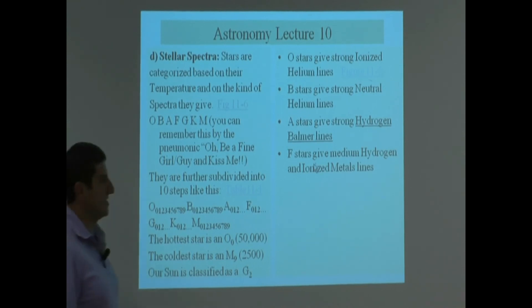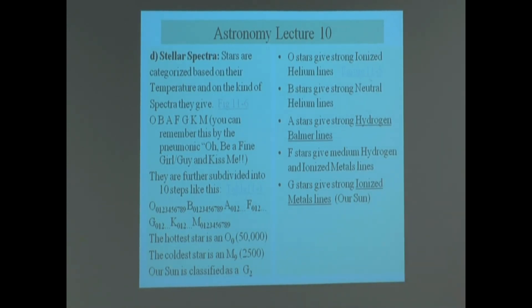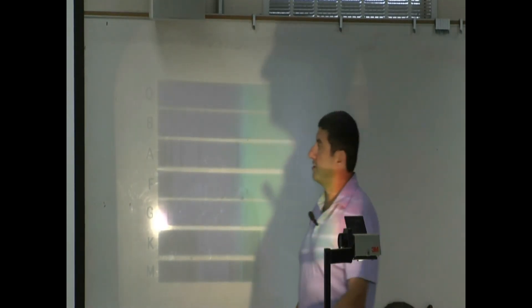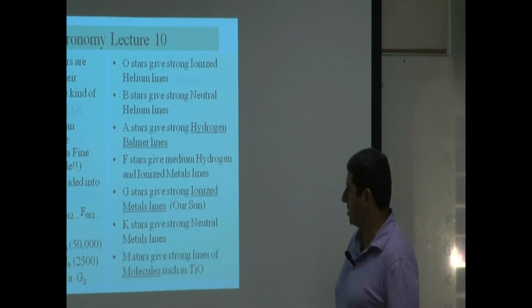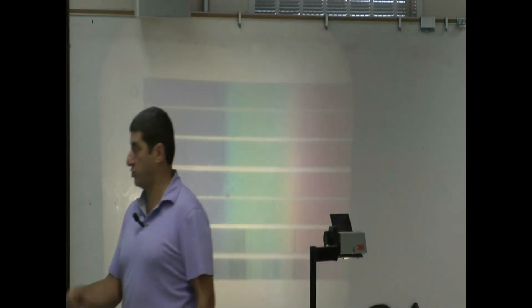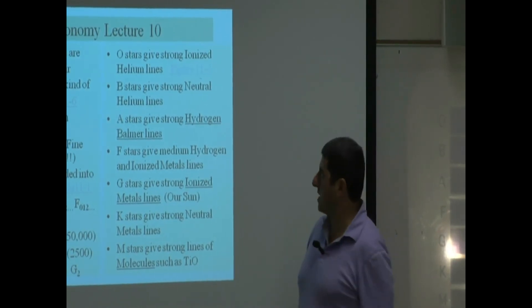F stars give medium hydrogen lines. They're not that strong. They give ionized metal lines. G stars give strong ionized metal lines. So our sun, it doesn't give the strongest Balmer lines, but it gives ionized metal lines. You see here, this is the other way to look at it. So the A star, you see here, gives the strongest Balmer line right here. This is the Balmer line. And then the G star, which is the sun, gives the strong ionized metal line. K stars give strong neutral metal lines. M stars give strong lines of molecules. Well, you can see the M star is distinguished quite a bit. All these lines, all these lines. So all those lines are absorption lines of molecules, like titanium oxide. Okay, so that's how they categorize them according to their spectra.